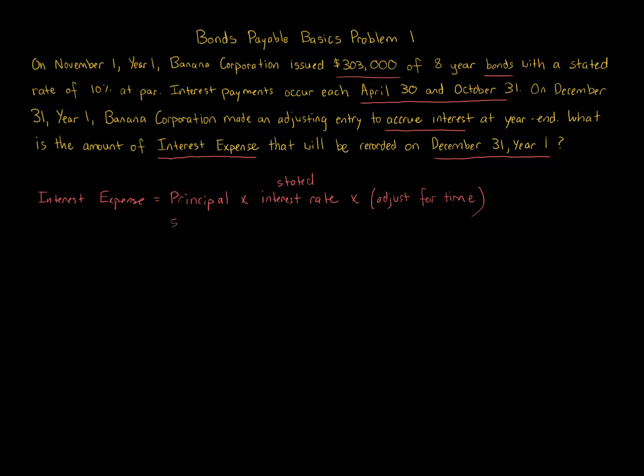$303,000 is the principal. That is the face amount of the bonds. Now, if that gets paid off over time, the principal amount goes down. So if you're told that a bond is being paid in installments other than interest, then you have to adjust the principal amount. We're not told anything here. The interest rate that's stated is 10%. Stated rate of 10%.